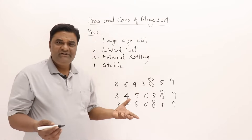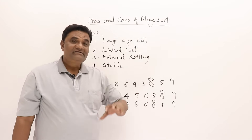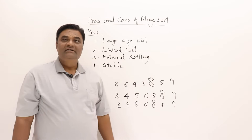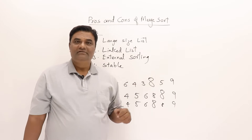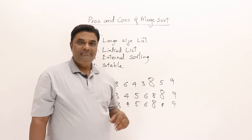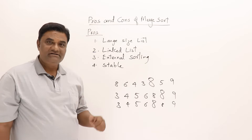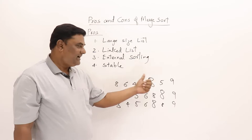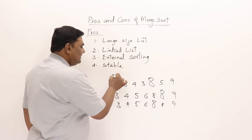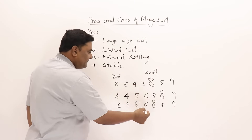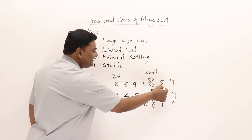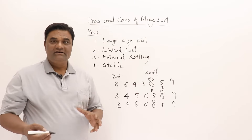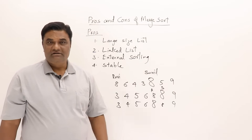For numbers, the importance of stability may not be obvious, but consider student records sorted by marks out of 10. If two students have the same marks (both 8), their previous arrangement — say by name or roll number — should be preserved. So Ravi's record should come before Sunil's. That is stability: duplicates preserve their relative order.